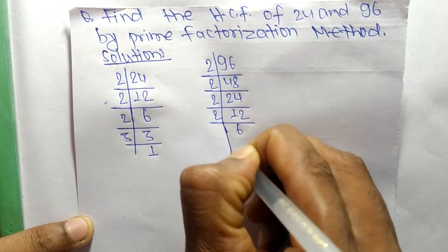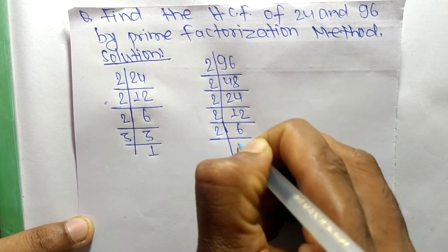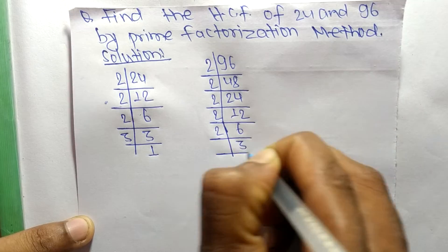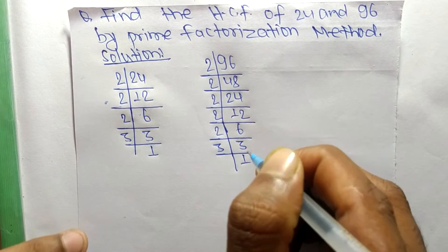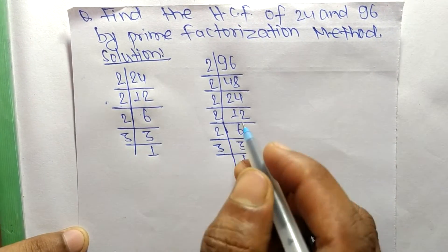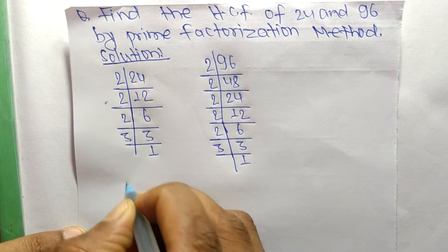2 times 6 equals 12, 2 times 3 equals 6, and 3 times 1 equals 3. Now from these prime factors we can write: